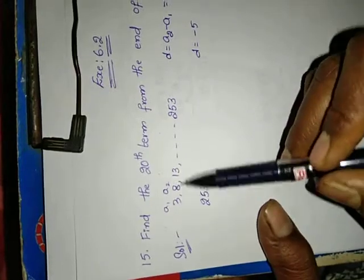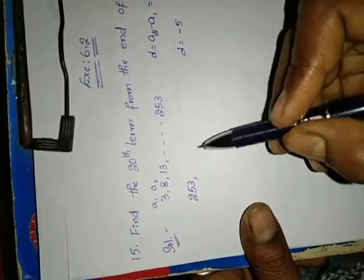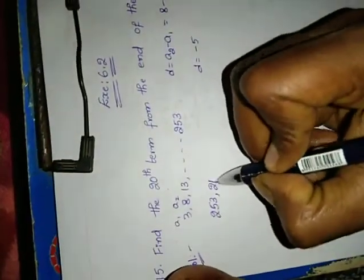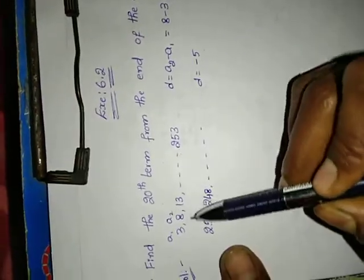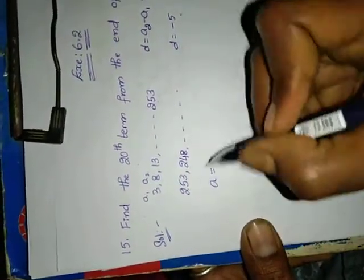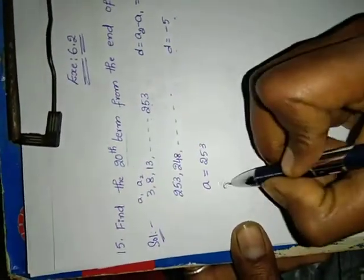Did you understand? When the series is reversed, the numbers subtract by 5 each step, so d equals minus 5. And 253 becomes the first term, a equals 253. From here, we have to find the 20th term, so n equals 20.